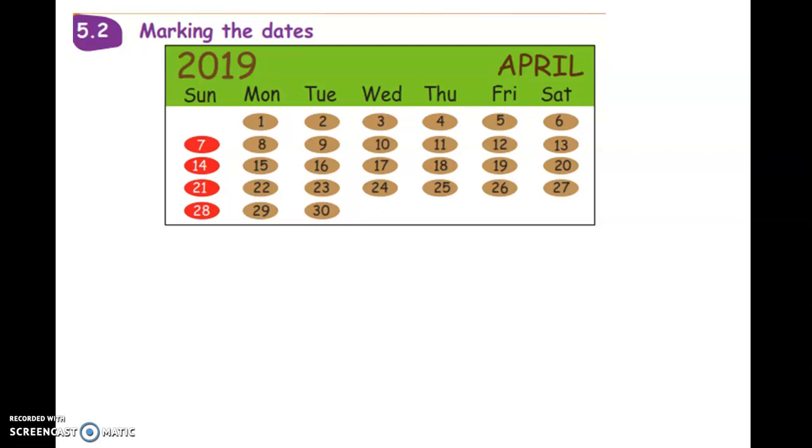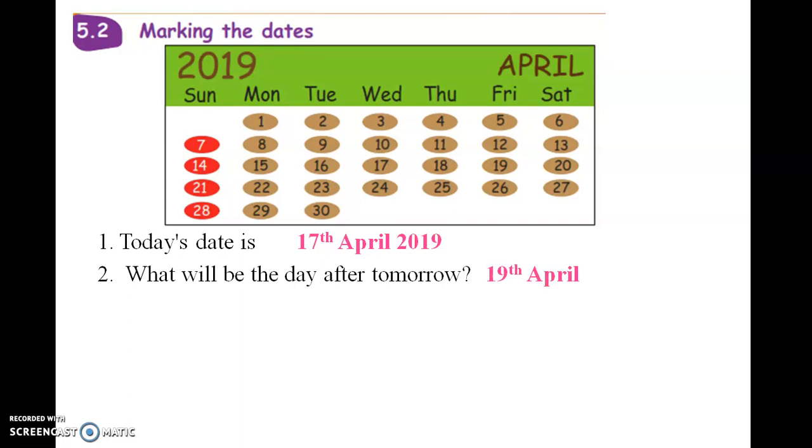Now let us see marking the dates. In this picture, you can see the April month calendar 2019. Suppose today's day is 17th April 2019.